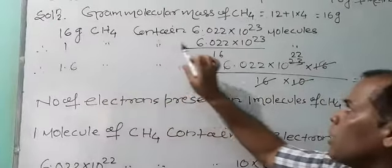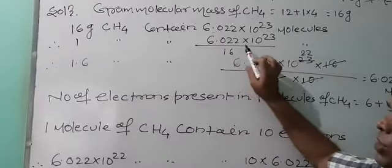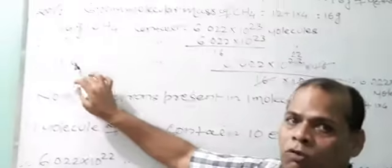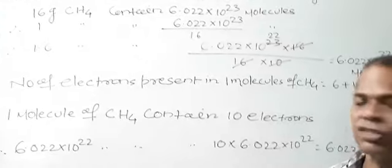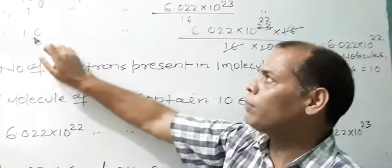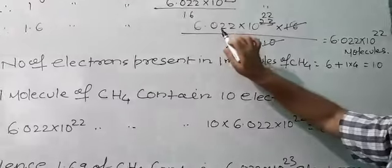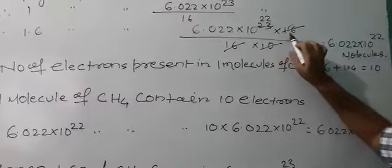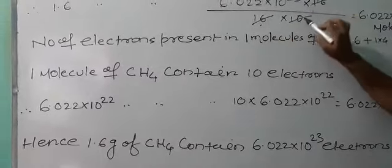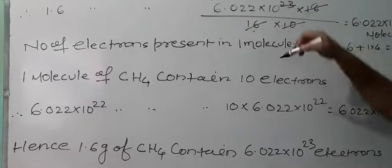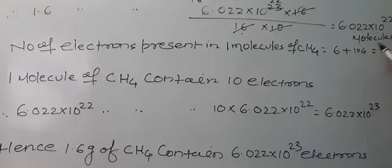Therefore, 1 gram of CH₄ contains 6.022 × 10²³ ÷ 16 molecules. Therefore, 1.6 grams of CH₄ contains 6.022 × 10²³ × 1.6 ÷ 16. Removing the decimal, place 10 in the denominator, then solve it — it comes to 6.022 × 10²² molecules.